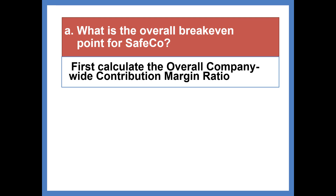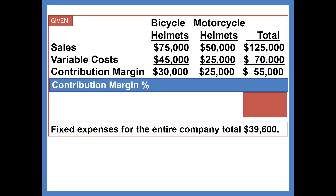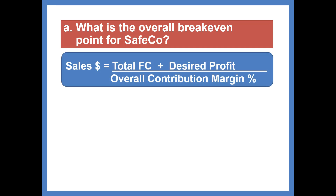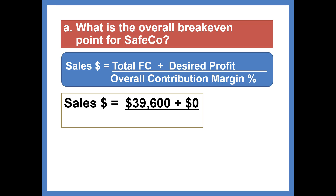What is the overall break-even point for Safeco? First, we'll calculate the overall company-wide contribution margin ratio. Looking back at what's given, we compute that by taking $55,000 divided by $125,000, which calculates to be 44%. Plugging into the contribution margin ratio method formula, sales dollars equal $39,600 of total fixed cost plus zero profit at the break-even point, divided by 0.44. Company-wide sales must be $90,000 in order to break even.